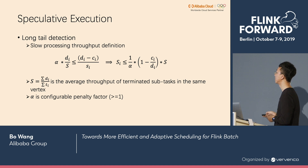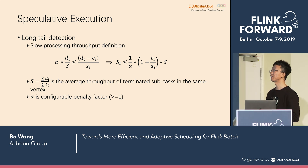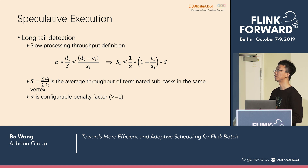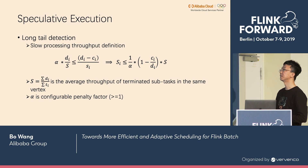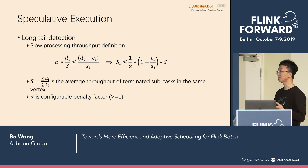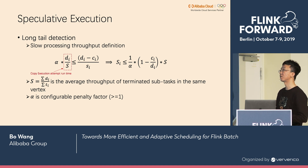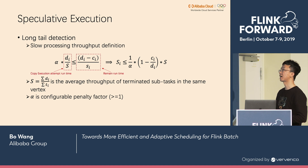The most important problem of speculative execution is how to detect slow sub-tasks. We use an equation to define processing throughput. In this equation, Di is the total input data size of the current attempt, S is the average throughput of finished sub-tasks in the same vertex, Ci is the already processed data size, and Si is the current average processing speed of this attempt. Thus, Di divided by S is the expected execution time, and Di minus Ci divided by Si is the remaining time. If Si meets this equation condition, we call this task a slow task.